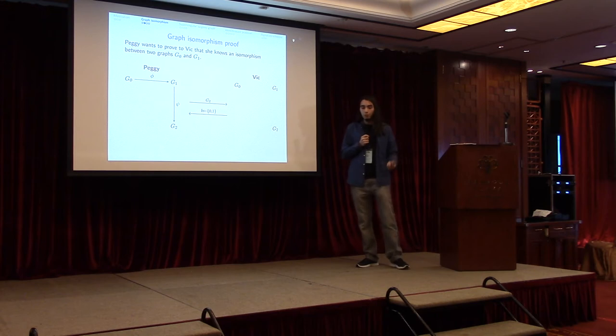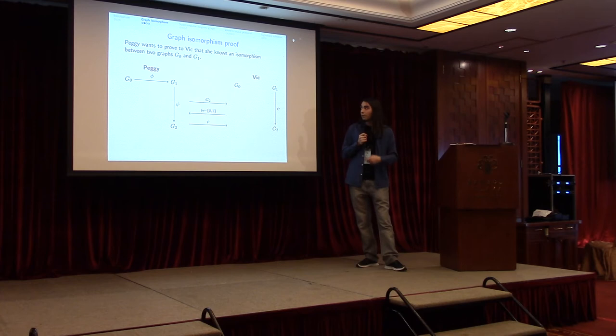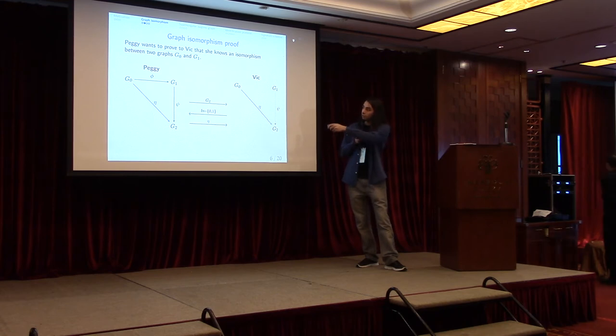Now Vic sends a challenge which is just one bit, either 0 or 1. I am going to use the red color to represent what happens when the bit is 0 and blue for when the bit is 1. When the bit is 0, Peggy just reveals this vertical isomorphism.